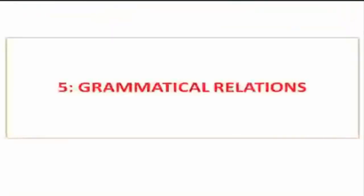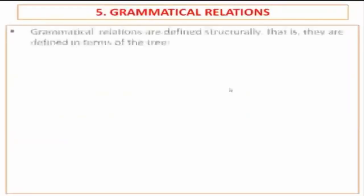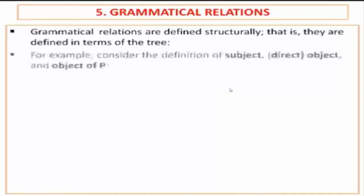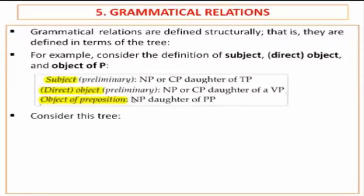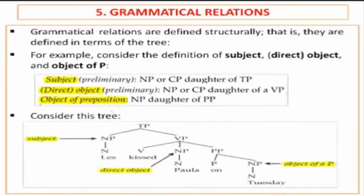Now we move to grammatical relations. Grammatical relations are defined structurally — that is, they are defined in terms of the tree. We need to define what is a subject, an object, and objects of preposition. As you can see here, the NP is the subject, which is the daughter of TP.